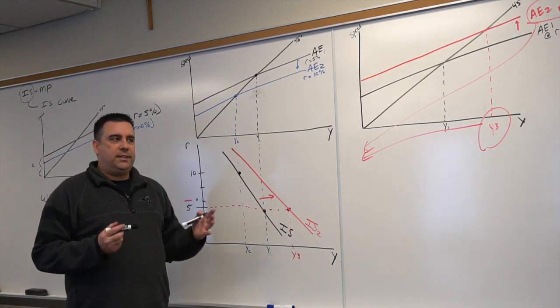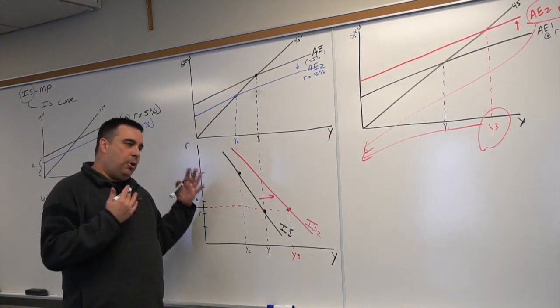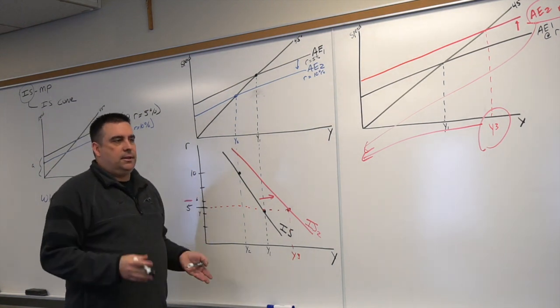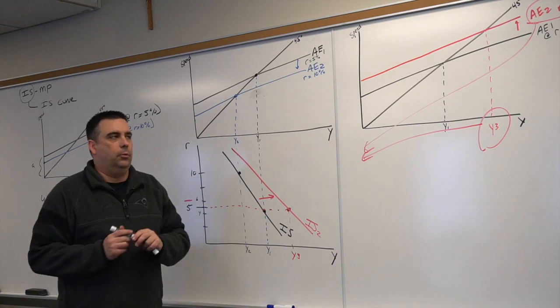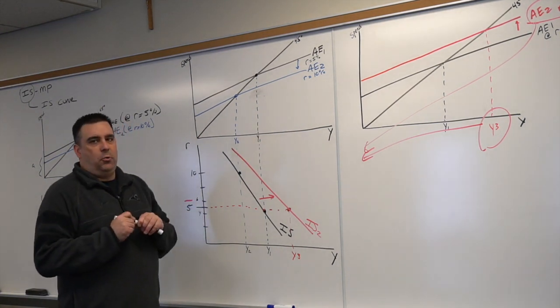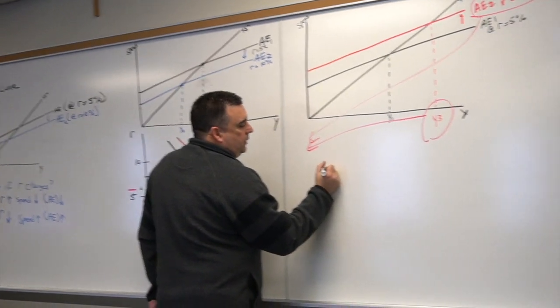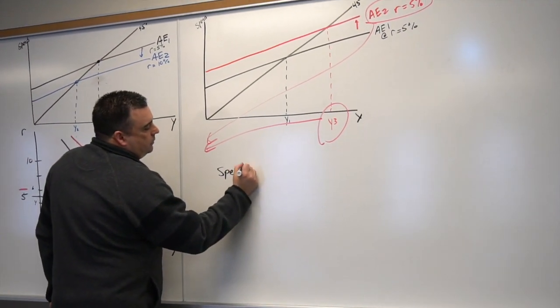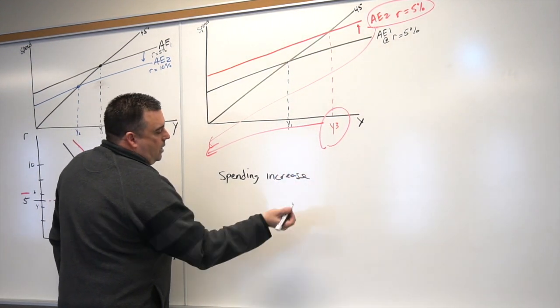While IS does not completely, truly, perfectly just represent spending, it generally is showing spending. So it's almost easier to think of it as a spending curve. And again, that's not perfect, there's going to be some exception to the rule, but it generally is going to work.